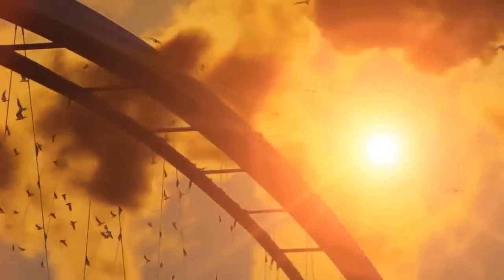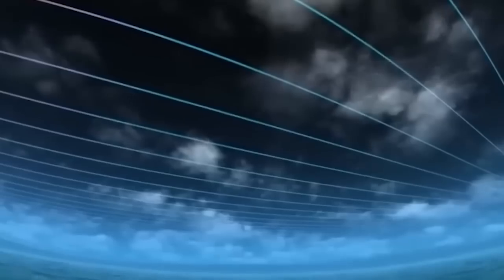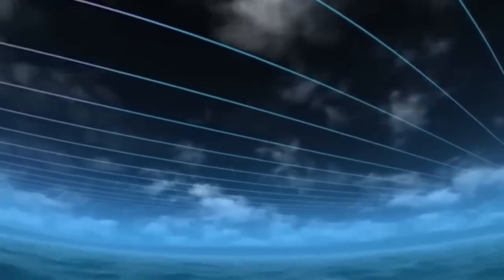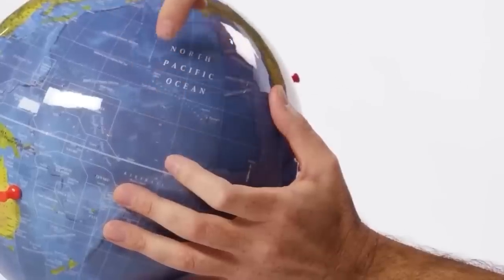Even the International Space Station faces certain vulnerabilities as it passes through the anomaly region. While its interior and occupants are well protected, certain instruments mounted outside the ISS, such as the Global Ecosystem Dynamics Investigation mission, can experience disruptions.